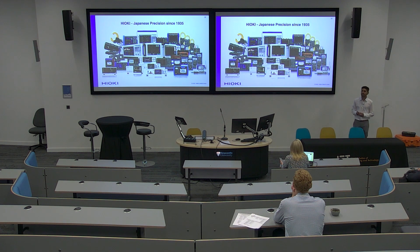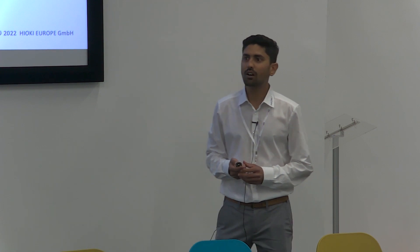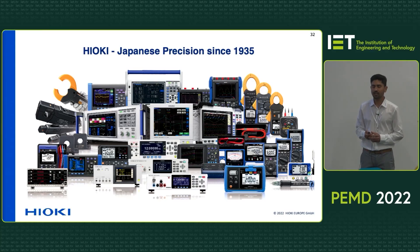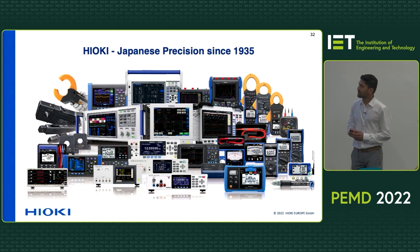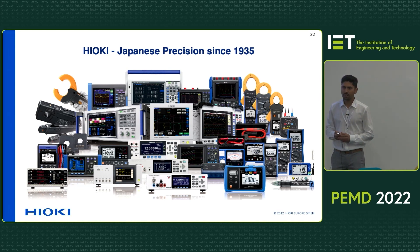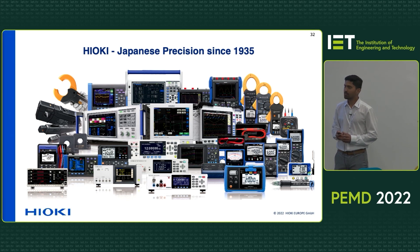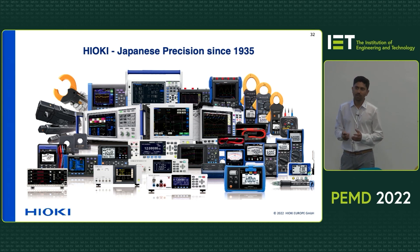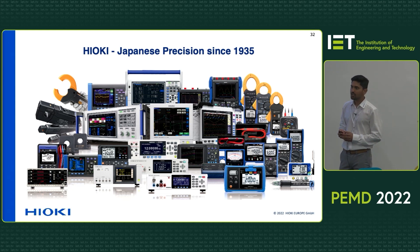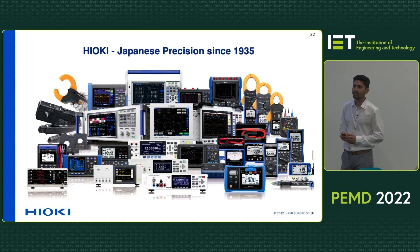Hioki is a company based in Japan in the field of test and measurement instrument manufacturing since 1935. Hioki manufactures field measuring instruments such as multimeters, clamp meters, and also professional measuring instruments related to battery testing, electrical safety testing, data loggers, high-end memory recorders, power meters, power analyzers, current clamps, and current sensors.